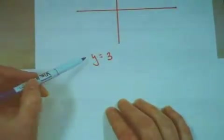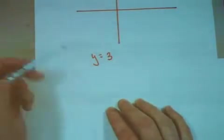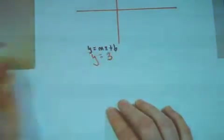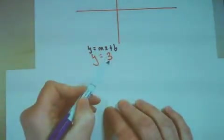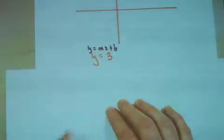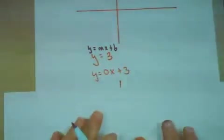Let's graph the equation y equals 3. Remember, this is y equals mx plus b. Does the 3 represent the m, the x, or the b? Yeah, the 3 represents the b.